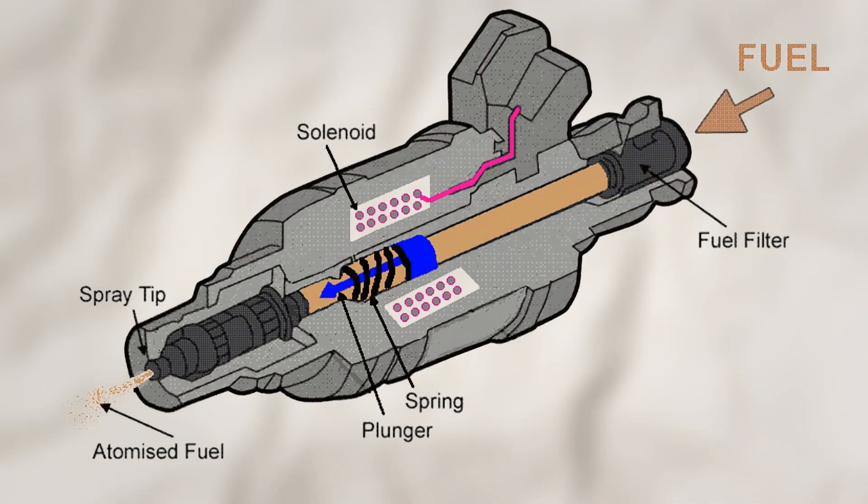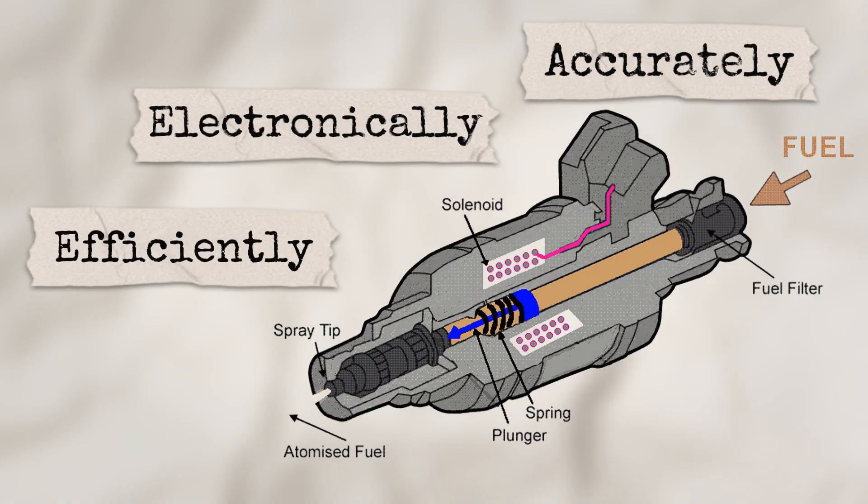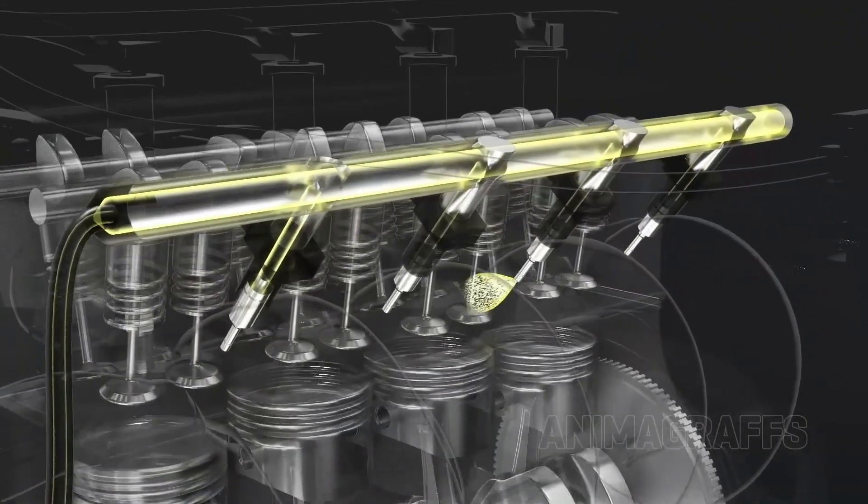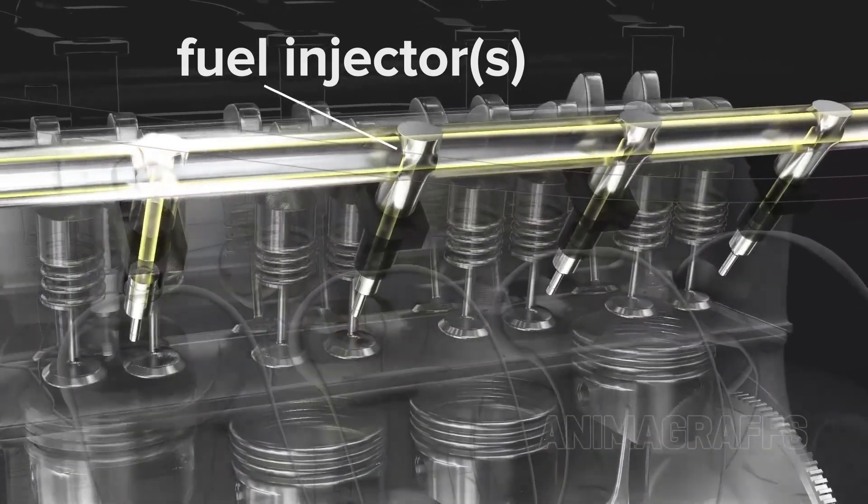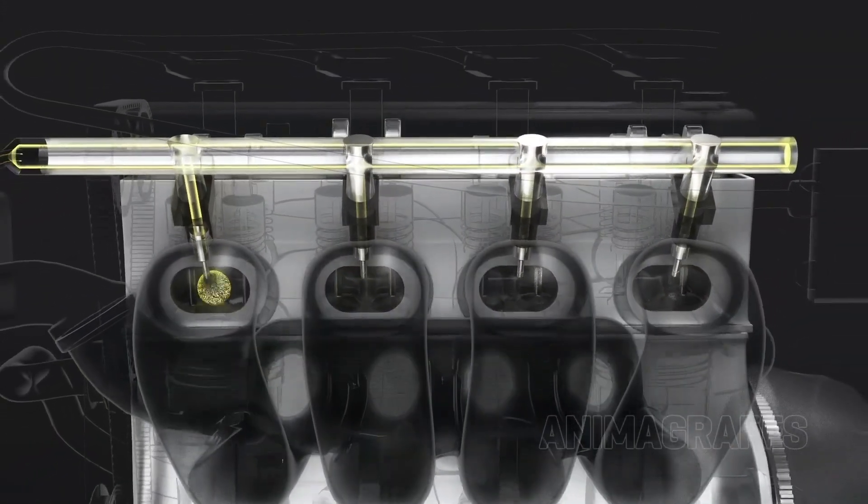Fuel injection solved all of that by delivering fuel more accurately, electronically, and efficiently. So how does it actually work? At the heart of the system are fuel injectors, tiny electronically controlled valves. Think of them like nozzles that spray fuel into the engine.